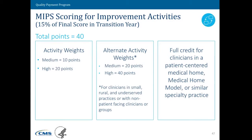For improvement activities, you choose from the inventory of activities that Molly mentioned before, with the goal of getting towards 40 points. Particularly for this group, if you're in a small, rural, or underserved practice, the number of activities you need to report is less — each activity counts double, so you only need to report a maximum of two medium activities or one high-weighted activity to get the maximum points. Each activity is worth a certain number of points, and if you're in a patient-centered medical home, you automatically get full credit in the improvement activity category.